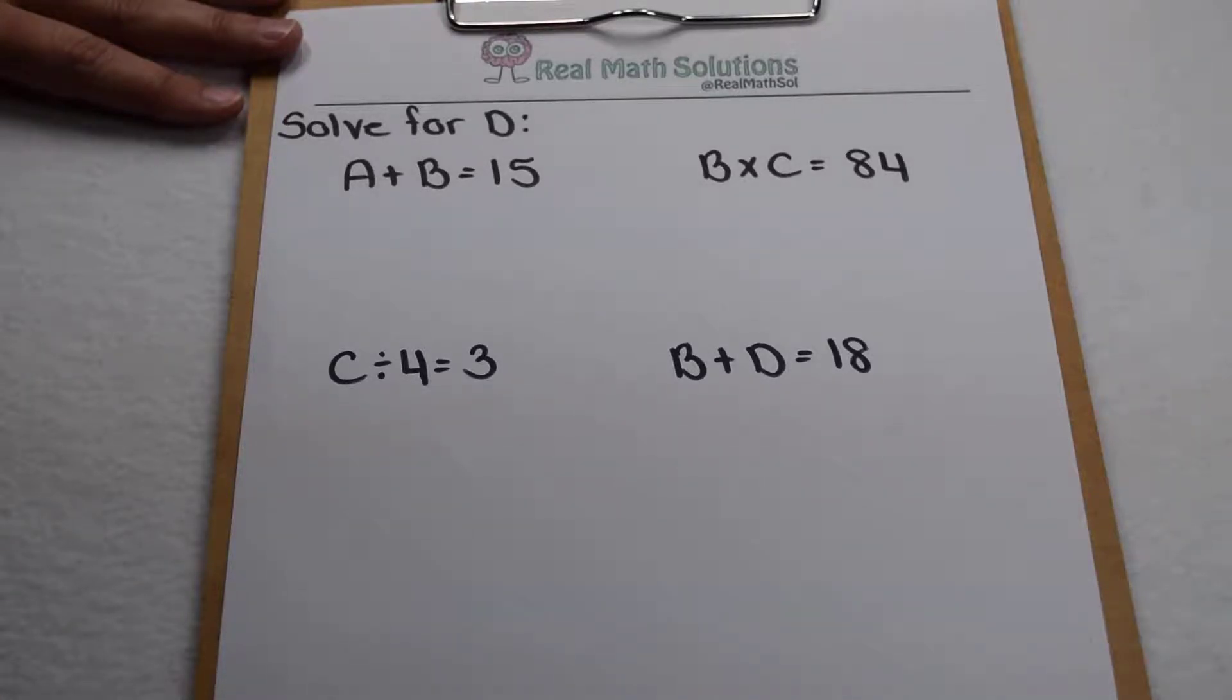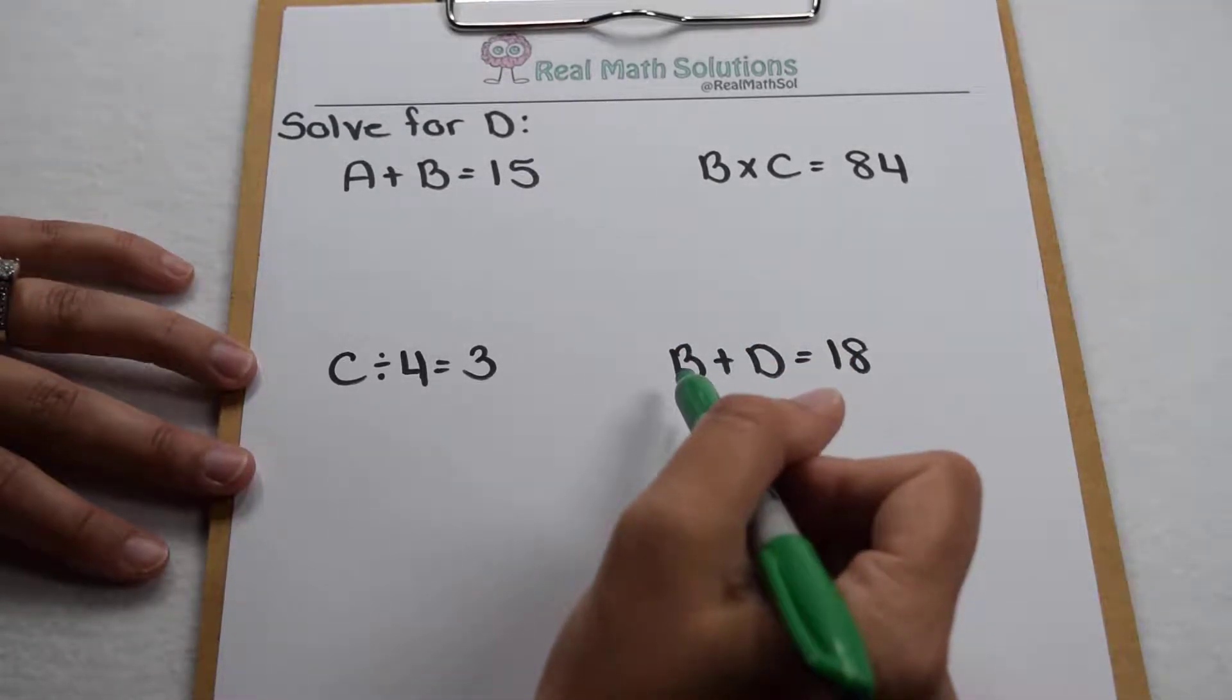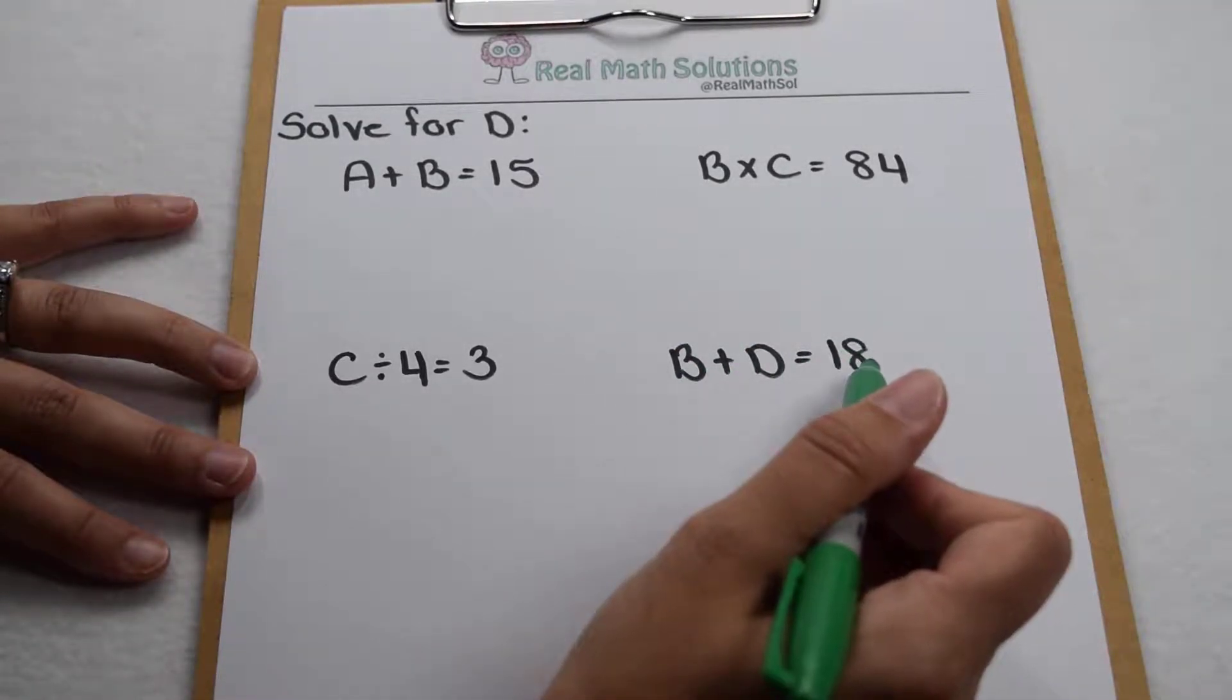Here we have a series of equations and our goal is to solve for d. If we check down where d is, all we know so far is that b plus d equals 18.